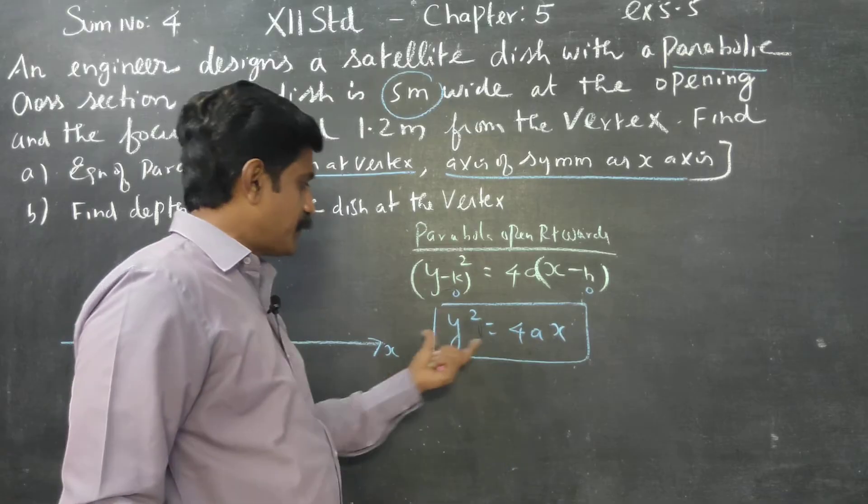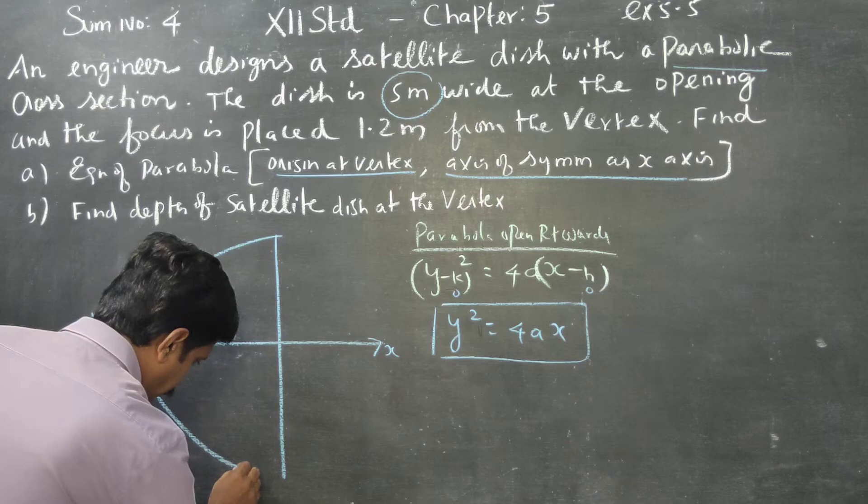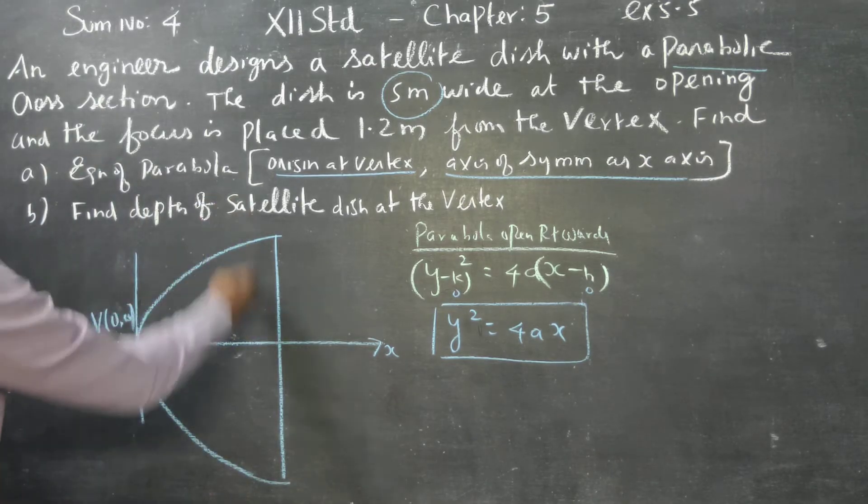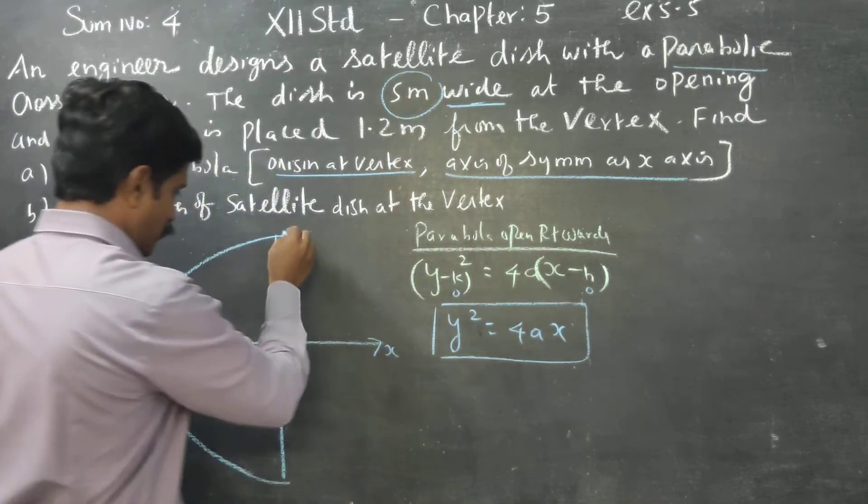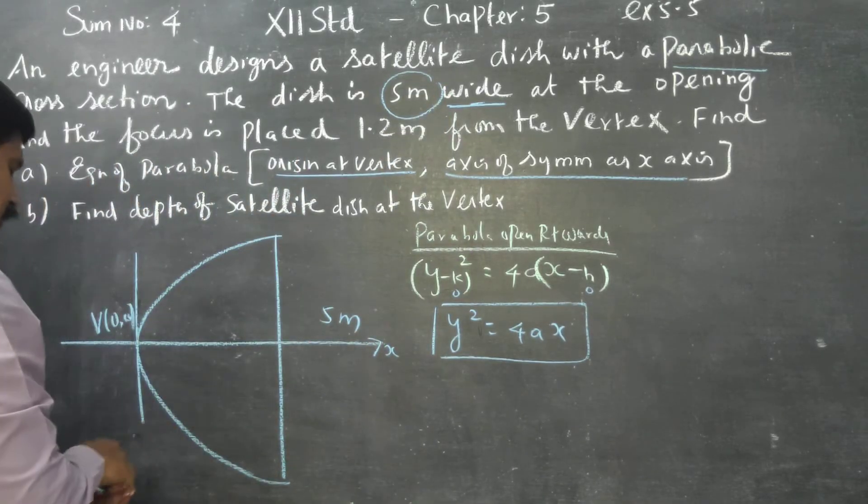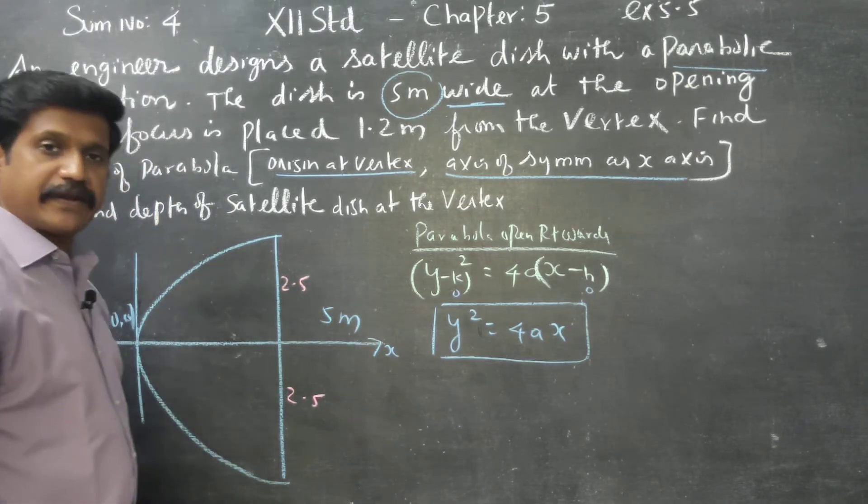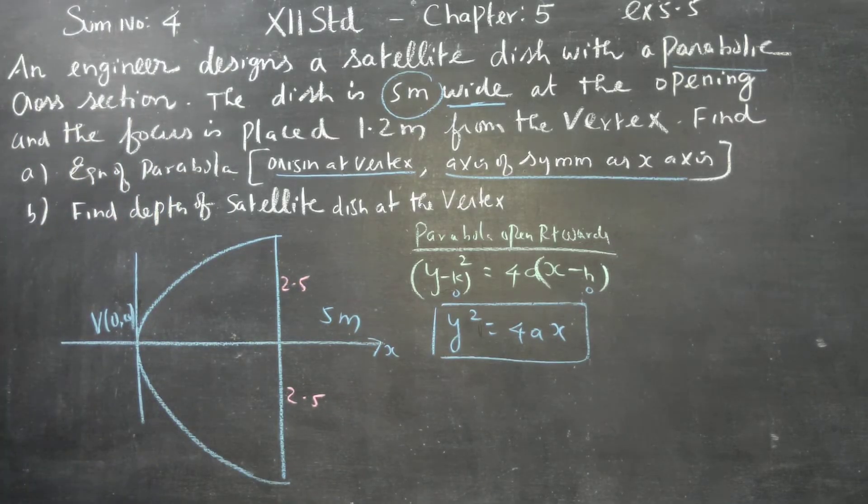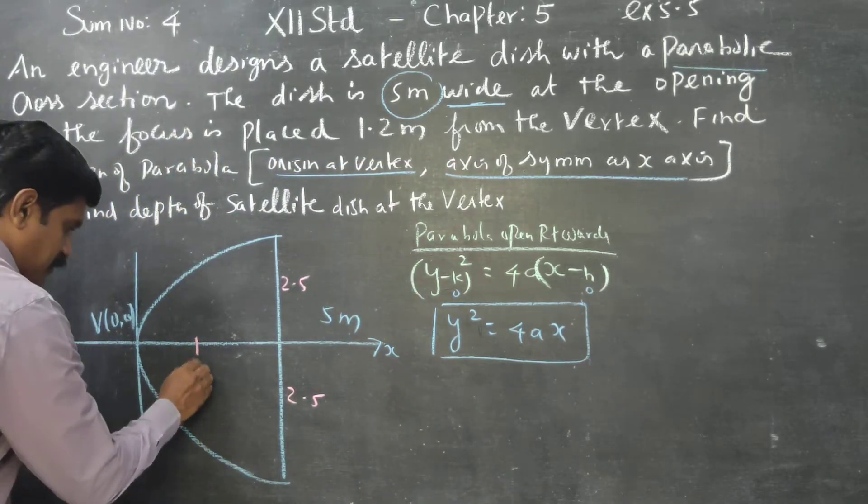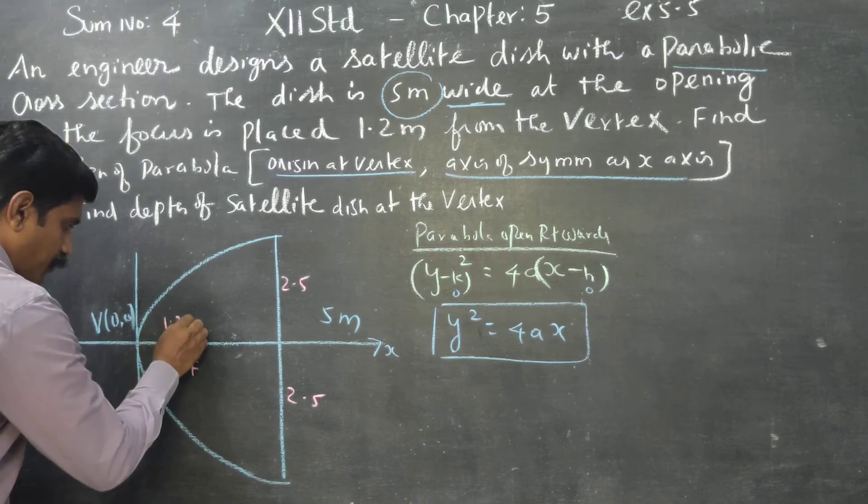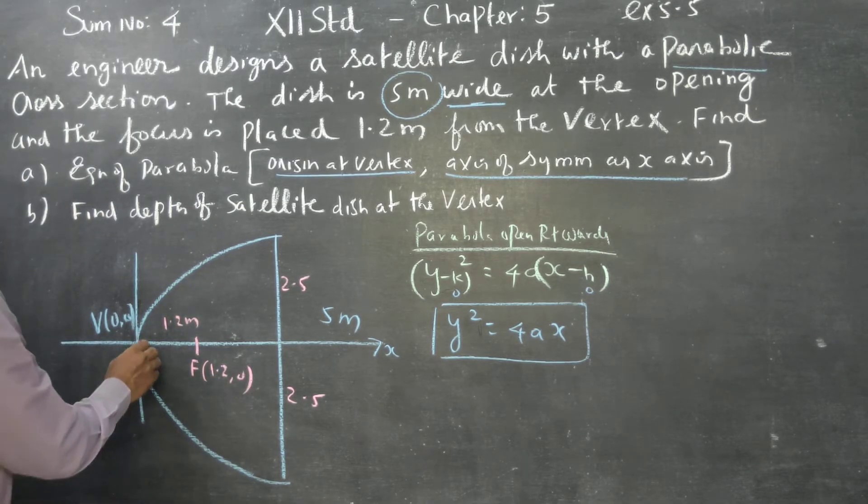Since h and k are zero, substitute. Vertex is zero zero, so y square is equal to 4ax will be my equation of this satellite dish. In the satellite dish, width is 5 meters total, 2.5 on each side. Next, the focus is placed at 1.2 meters from the vertex.